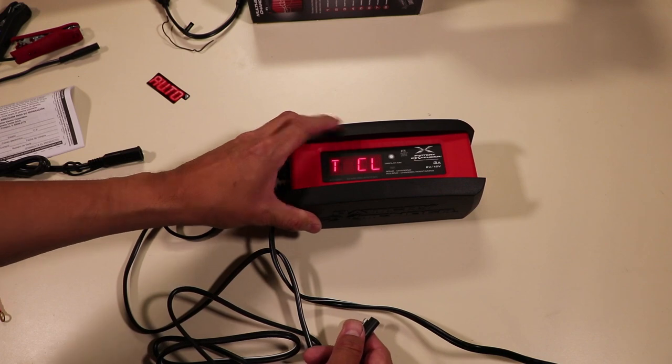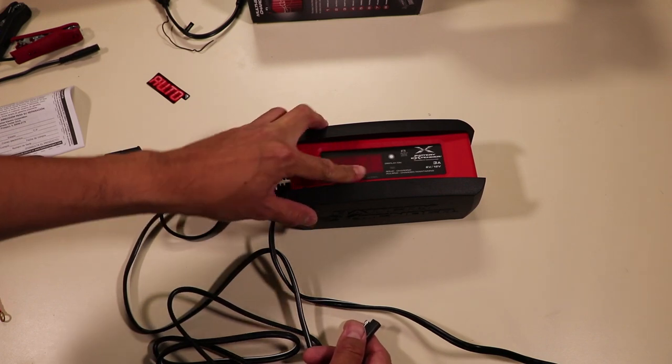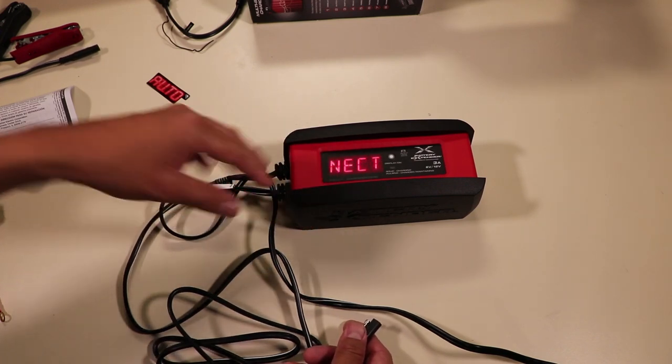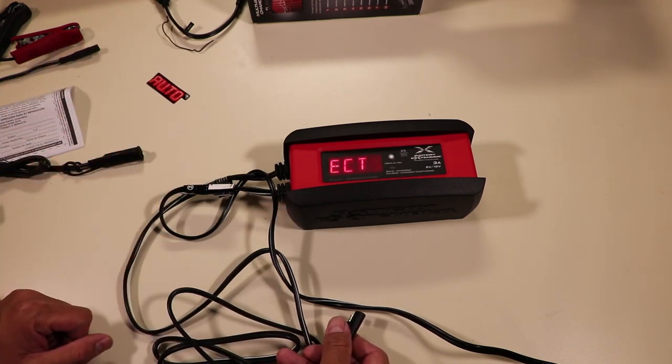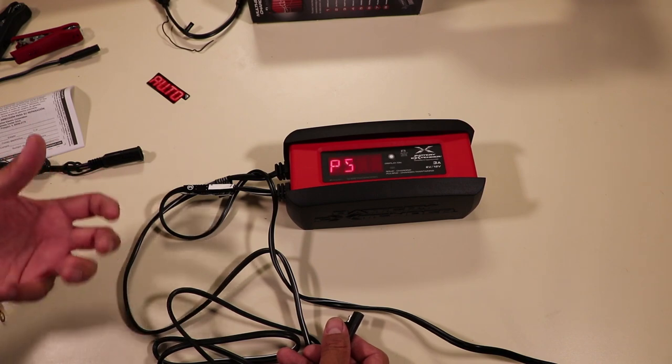Once this is hooked up to the battery, this will show you the percentage that the battery is at and what the charger is doing, whether it's maintaining or whether it's charging. So let's go look at the way that this looks once it's set up on a car.